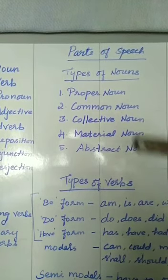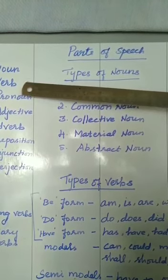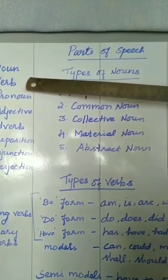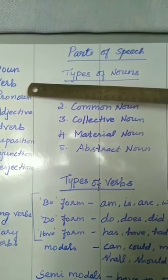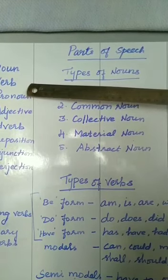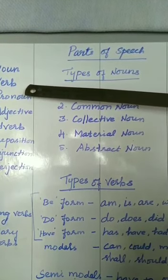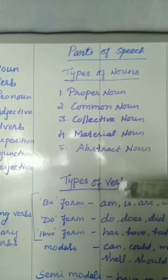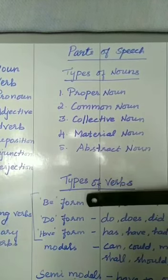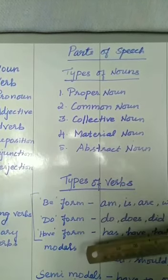Next we can move on to verbs. What are verbs? All action words come under verbs. For example: come, go, sit, walk, listen. Apart from action verbs, we have so many other verb types. What are they? Be form verbs, do form verbs, have form verbs, and modal verbs.